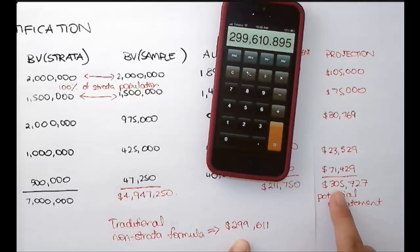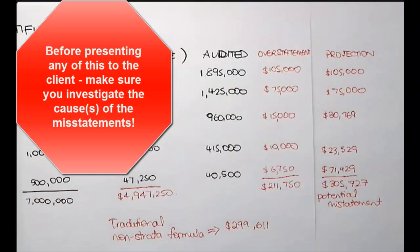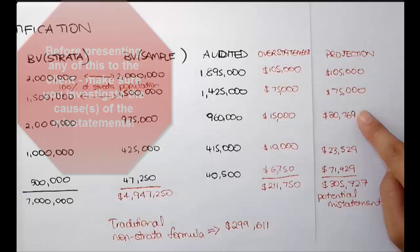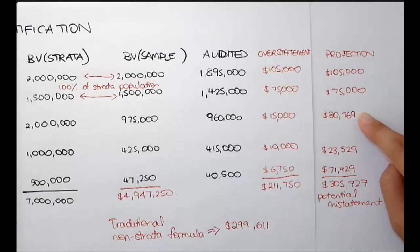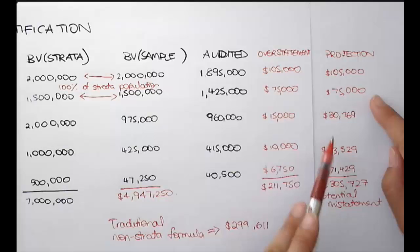The more accurate way is to do it per strata. Before presenting any of this to the client, we'd want to investigate the cause of each misstatement where we're making a projection — is it centred on a particular staff member or customer? Were they one-off mistakes or systematic errors? If they're systematic, we'll need to go away and do further testing. When projecting misstatements to the population using stratification, make sure you calculate your projection per individual stratum.